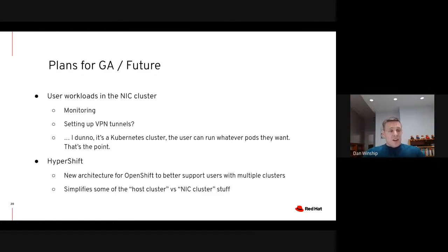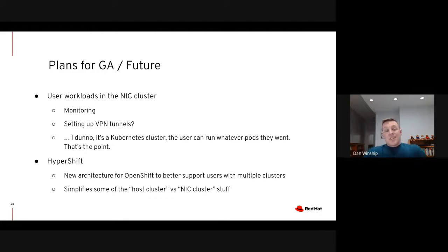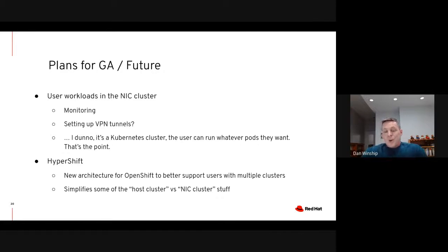The other thing that we are looking forward to in the future is Hypershift, which is a new architecture for OpenShift to support users with multiple clusters better. In the Hypershift model, you have one cluster that runs the control planes for all of the other clusters, and that essentially means that creating a new cluster is almost as fast as just adding a node to a normal Kubernetes cluster. For our purposes, it really simplifies the host cluster versus NIC cluster thing, because then you can just run the control planes for both of them on your Hypershift nodes.